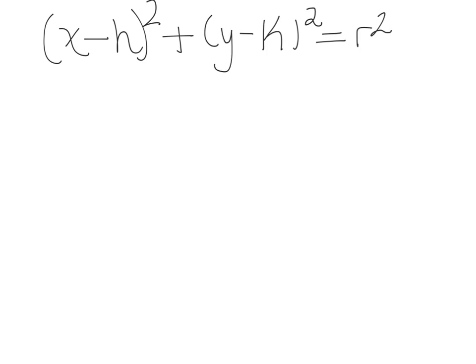So our next problem or set of problems is about circles. So I've written the generic form of a circle for you, and you should remember that h and k are the center, and we always have minus signs right here in the middle. So if it says plus, then the h or the k value would be a negative, and at the end down here you have your radius squared.